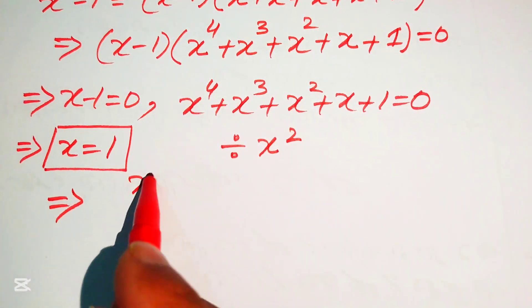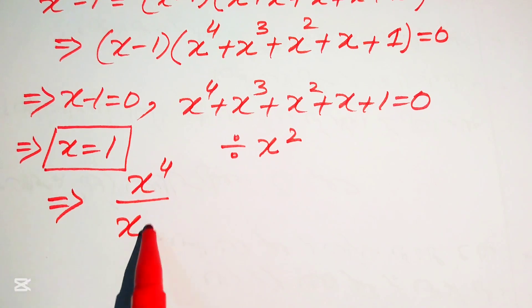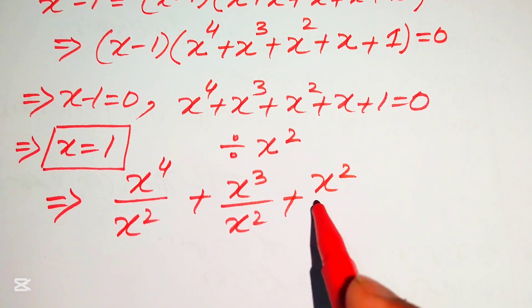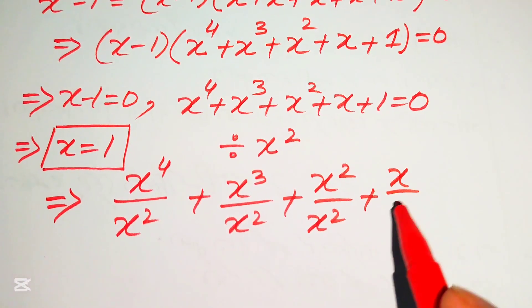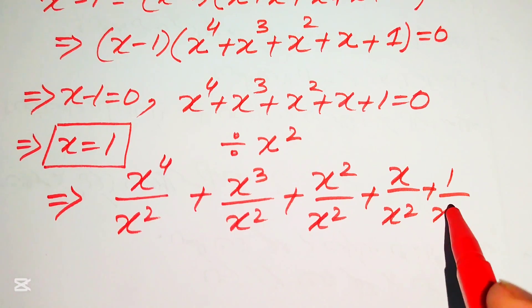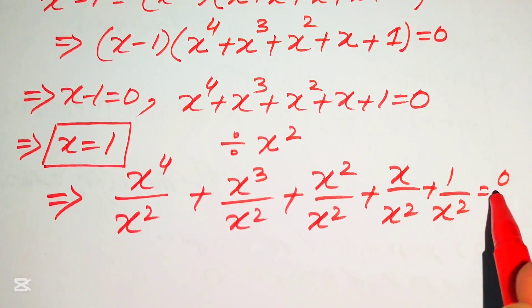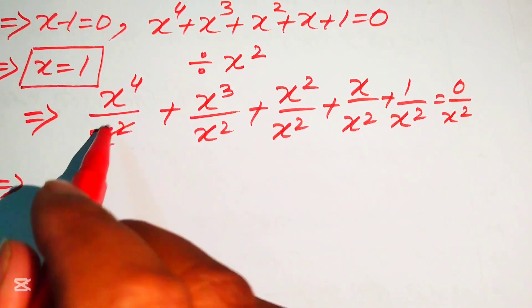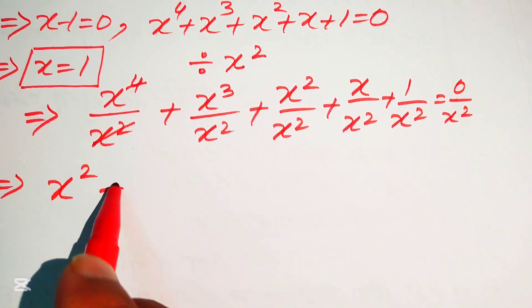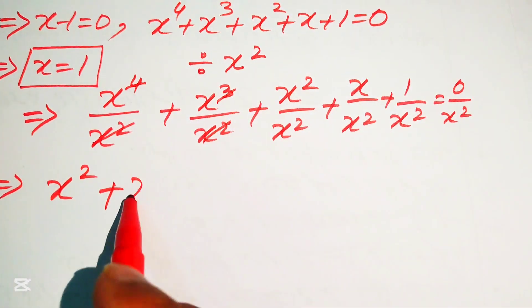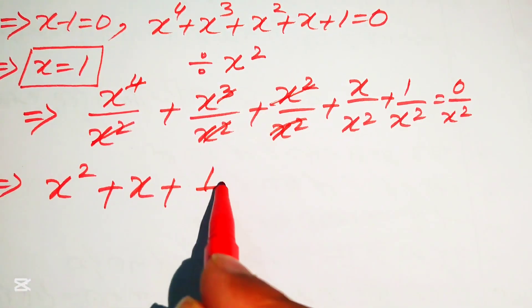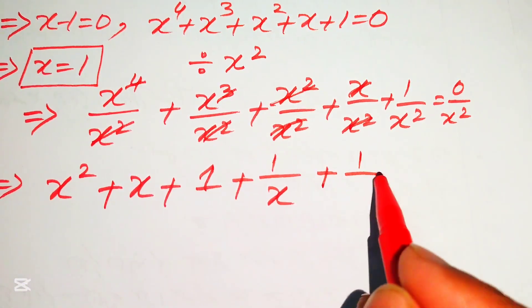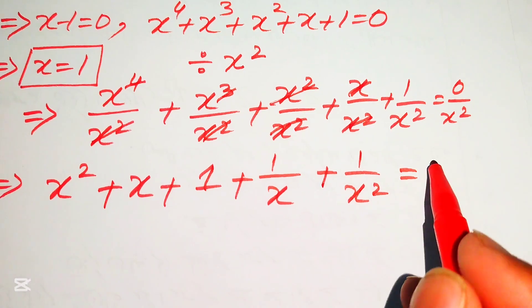Dividing each term by x squared gives x squared plus x plus 1 plus 1 over x plus 1 over x squared equals 0.